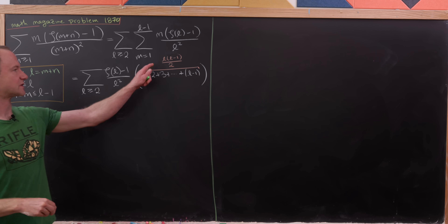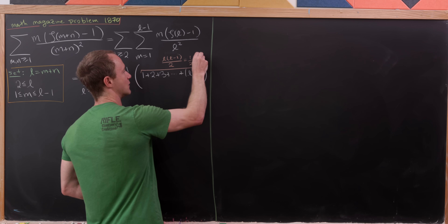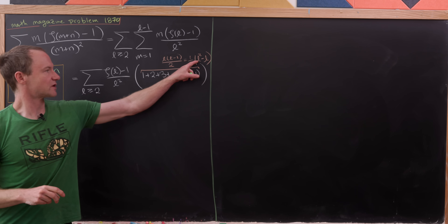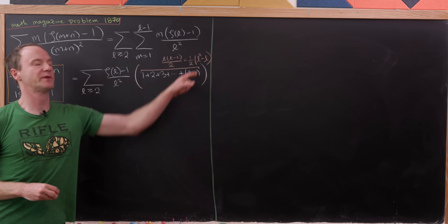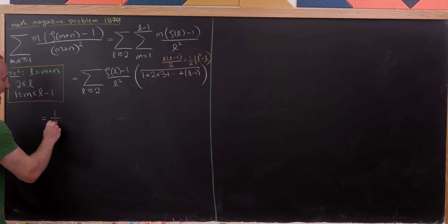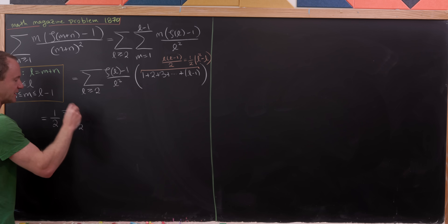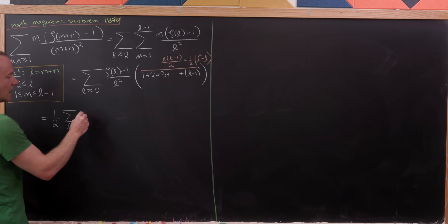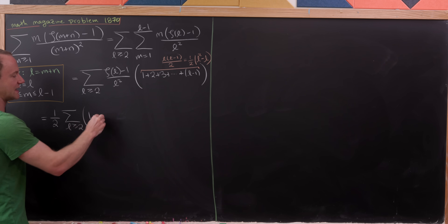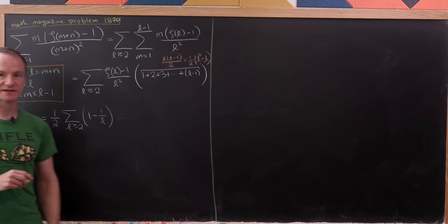We should recall that the sum of 1 through l minus 1 is l times l minus 1 all over 2. We can multiply that out to one half times l squared minus l. For the first term the l squareds will cancel, leaving 1 minus l for the second term. Bringing the half out front, we get one half times the sum as l is bigger than or equal to 2 of 1 minus 1 over l times zeta of l minus 1.